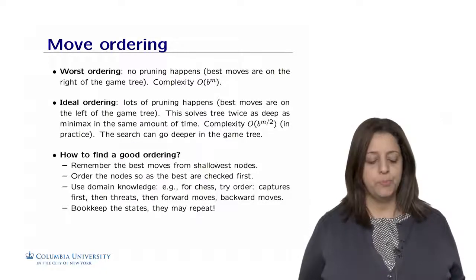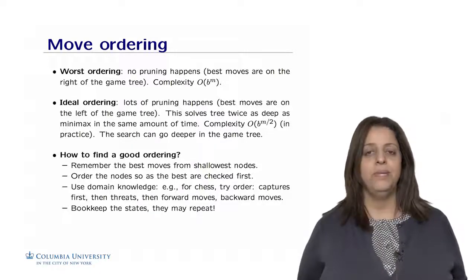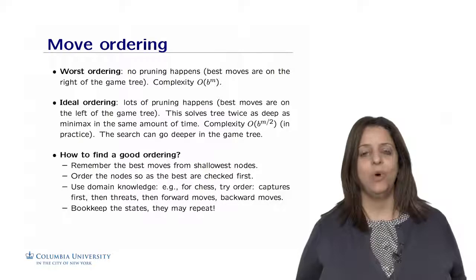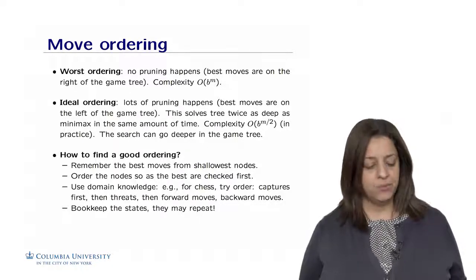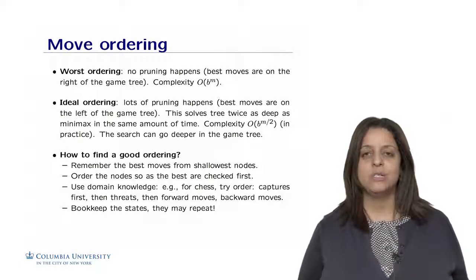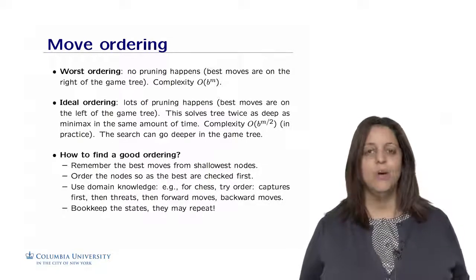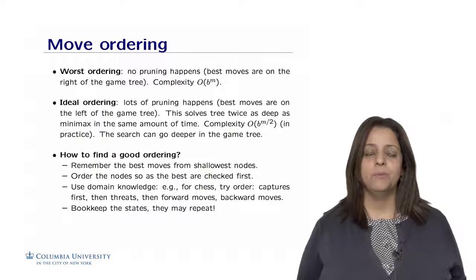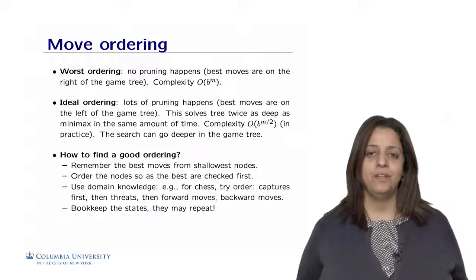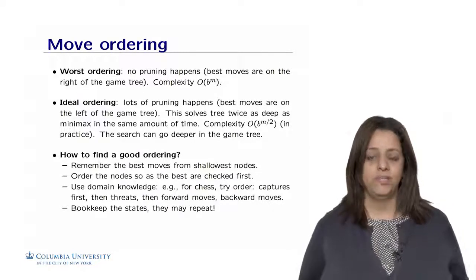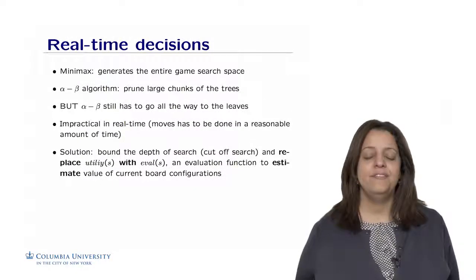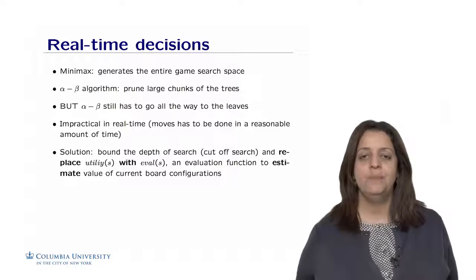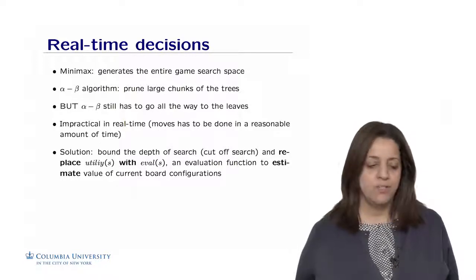And finally, we could bookkeep the states because many of them may repeat, and we don't necessarily need to recalculate the whole subtrees if we have them already in memory. So if we bookkeep and use some domain knowledge to explore the actions in some order, we can maybe provide a good ordering and have interesting pruning happening in the tree and hence go deeper into the game tree while we are searching. So minimax, alpha-beta pruning, and move ordering help us do a better exploration of the search space.